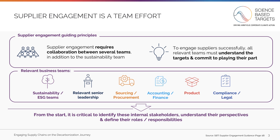Most often, your supplier engagement effort will include sustainability and ESG teams, relevant senior leadership, sourcing and procurement teams, accounting and finance teams, product teams, and compliance and legal teams. It's critical to identify your internal stakeholders, understand their perspectives, and then define their roles and responsibilities. It's important to do this from the start, so that supplier engagement is recognized and designed as a cross-team effort.